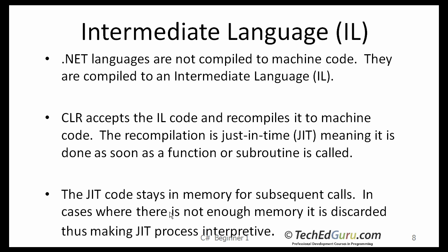So what is intermediate language, or IL? The .NET languages are not compiled to machine code directly, as they would be in a language like C. They are compiled to an intermediate language code. The CLR then accepts the IL code and recompiles it to machine code. The recompilation is just-in-time, meaning it is done as soon as the function or subroutine is called. The JIT-compiled code stays in memory for subsequent calls. In cases where there is not enough memory, it is discarded, thus making the JIT process interpretive.